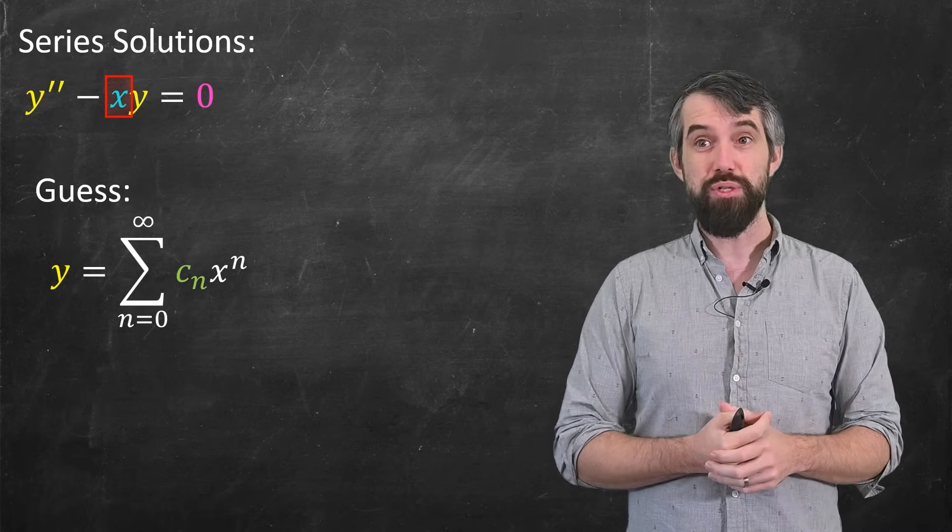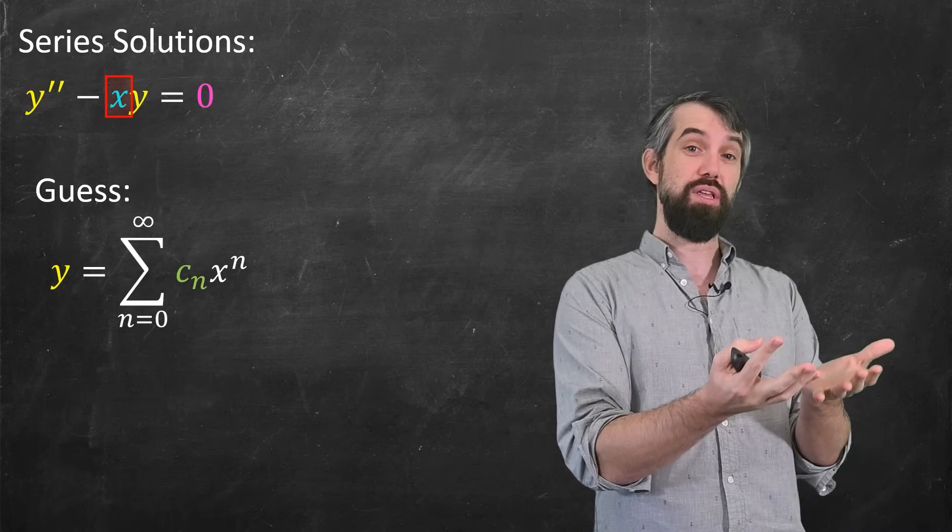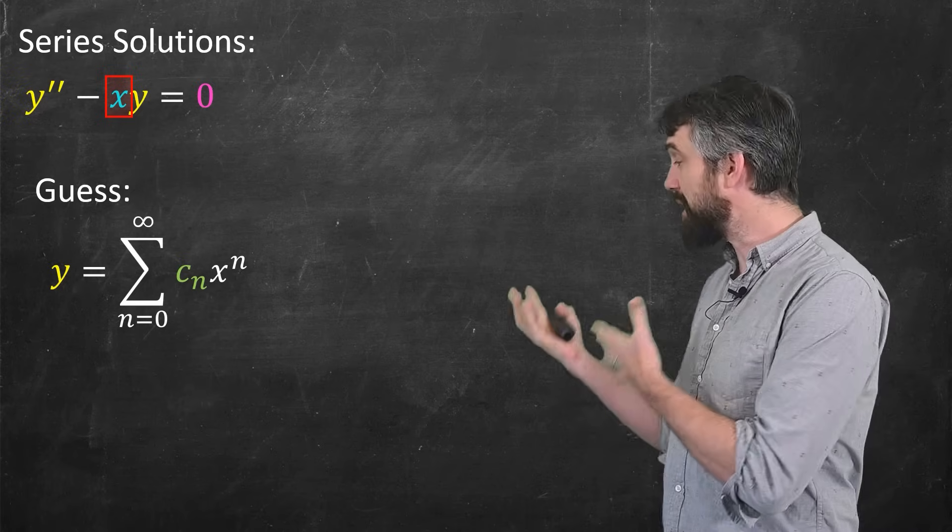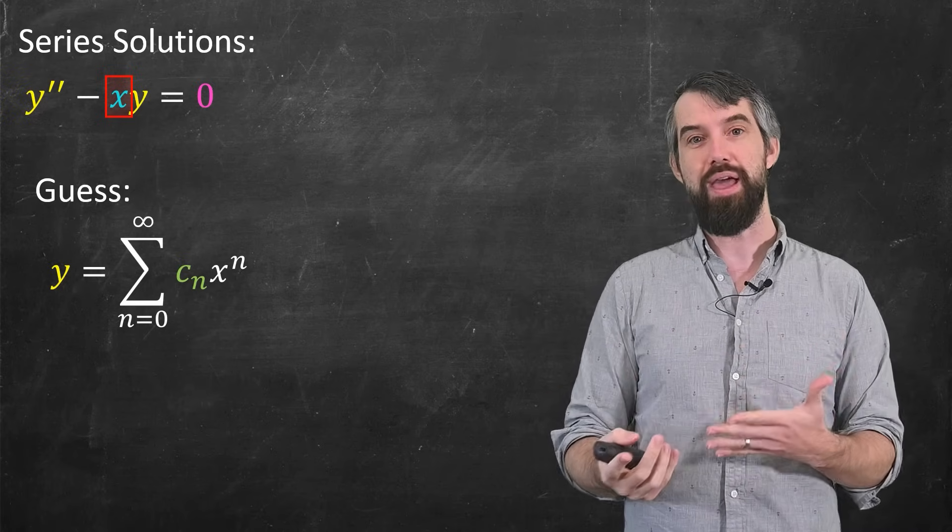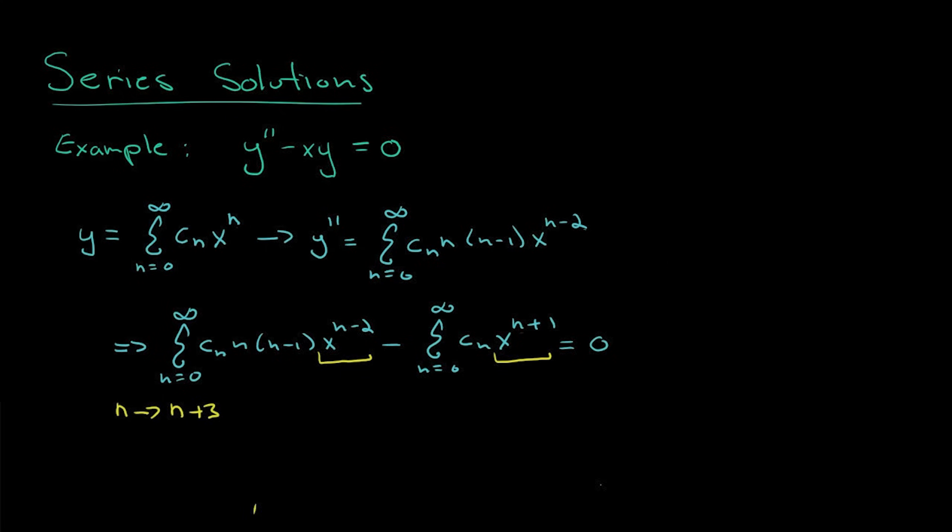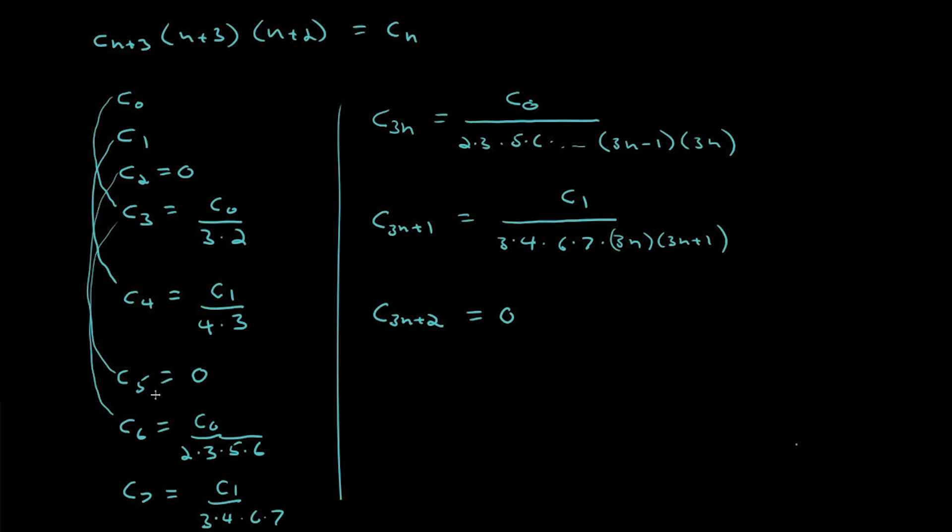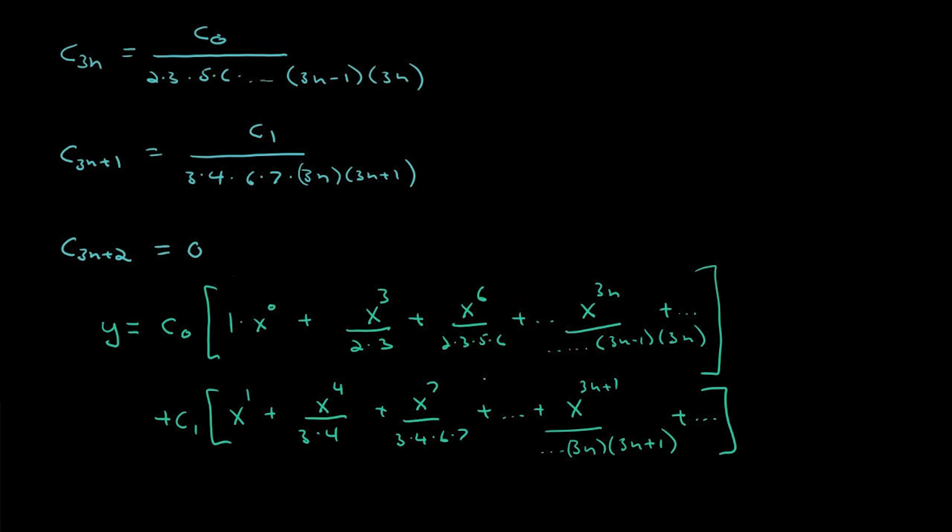And here what we're going to do is we're going to say, well, let's just imagine that our solution is a Taylor series, a sum of coefficients cn and then x to the power of n. I'll put up some slides here of me taking this guess and then working it out if you want to pause and read through it.